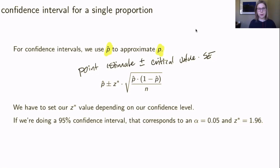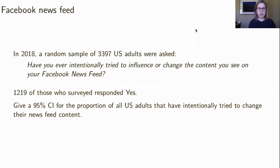We set our z* critical value depending on our confidence level. For a 95% confidence interval, that corresponds to alpha equals 0.05 and our critical z* value is 1.96. Now for an example: this is data from Pew Research — they did a random sample of 3397 U.S. adults in 2018 and asked them if they have ever intentionally tried to influence or change the content on their Facebook newsfeed.